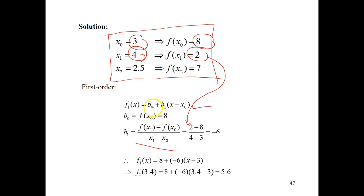Now that we have our B0 and B1, we can substitute into this equation. f1(x), which designates first order or linear, equals to B0 equals to 8 plus B1 equals to negative 6, times x minus x0. x is 3.4 minus 3. We substitute everything, we got the answer for the linear interpolation as 5.6.